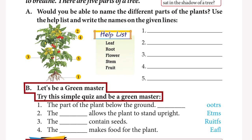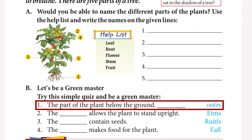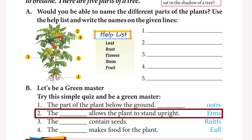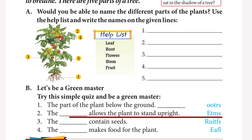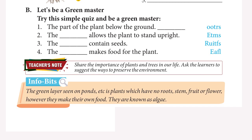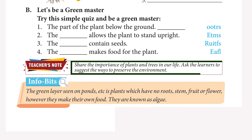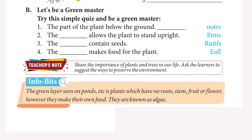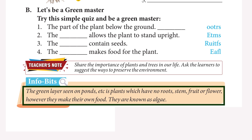Let's be a green master. Try this simple quiz. The part of a plant below the ground is the root. Roots provide food for the plant. Teacher's Note: Share the importance of plants and trees in our life. Ask the learners to suggest ways to preserve the environment. Info Bits: The green layer seen on ponds is algae — plants which have no roots, stem, fruit, or flower, but make their own food.